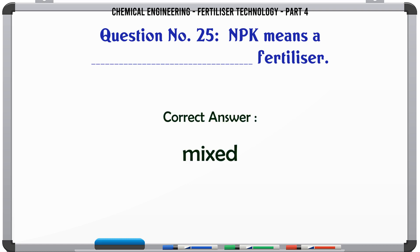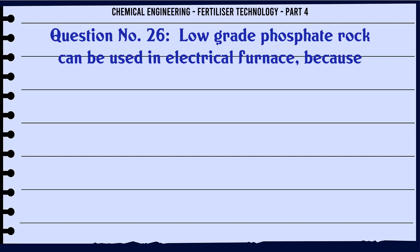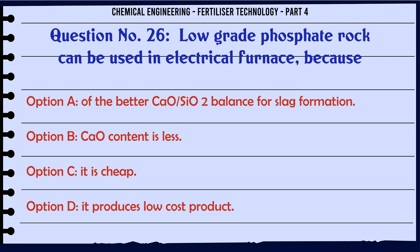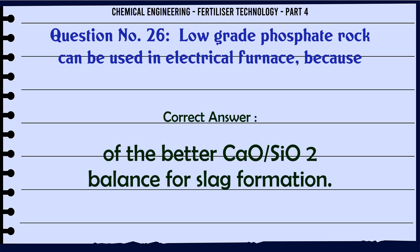Low-grade phosphate rock can be used in an electric furnace because: a. of the better CaO-SiO2 balance for slag formation, b. CaO content is less, c. it is cheap, d. it produces low-cost product. The correct answer is: of the better CaO-SiO2 balance for slag formation.